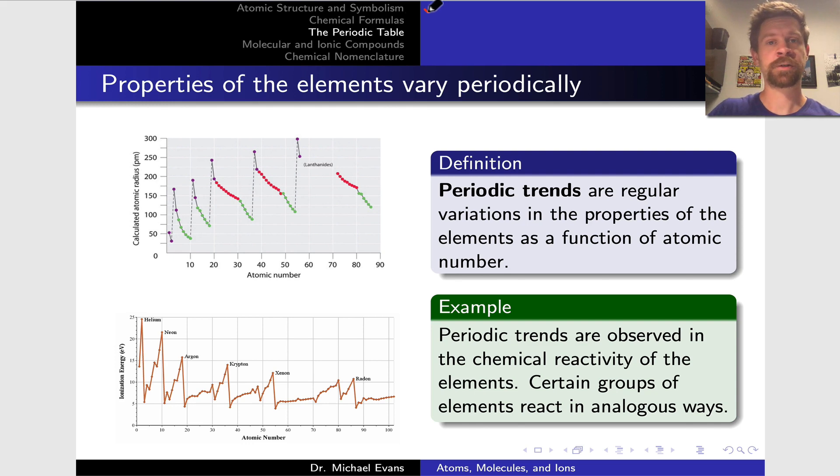So we've looked at atomic structure and symbolism, really the structure of the elements if we're talking about pure elements, and we've looked at chemical formulas which tell us about compound structure. Now we're going to look at how the elements are organized and some really deep patterns in the properties of the elements as manifested on the periodic table.